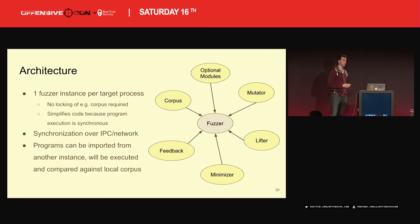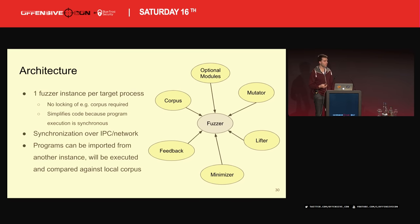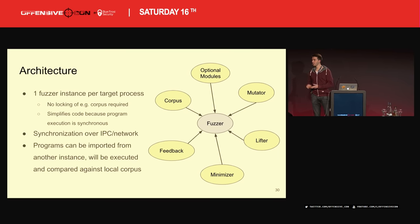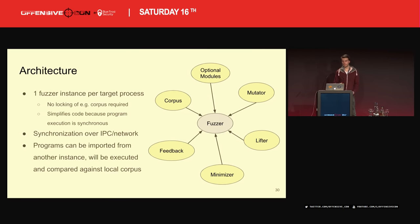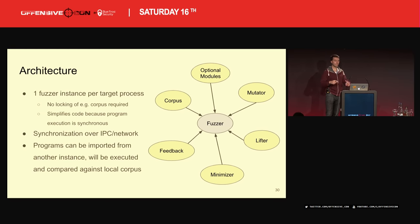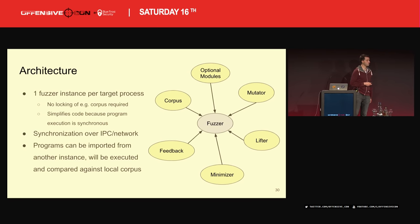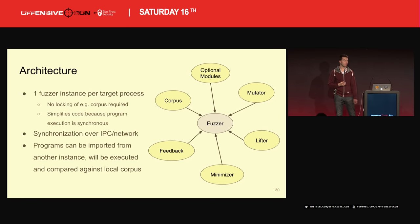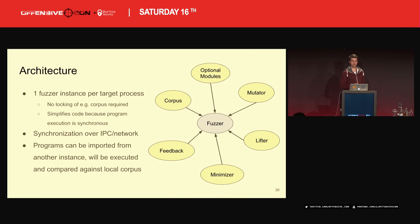Here's what the architecture looks like. The main fuzzer — or one fuzzer instance — is made up of one corpus, the mutator, the lifter, the evaluation, the coverage guidance, and minimization. Right now there's one instance per target process, which simplifies quite a few things. Many instances can synchronize over IPC or the network. The thing is modular — for example, synchronization is one optional module.